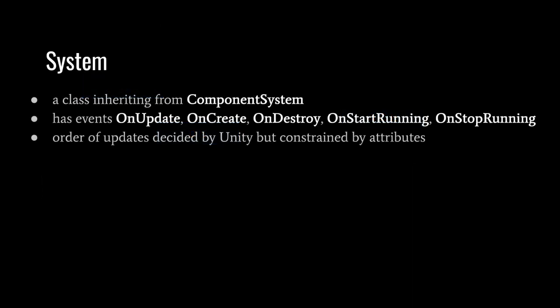A system, concretely, is a class inheriting from ComponentSystem. Like a MonoBehaviour, systems have event methods called in the game loop — OnUpdate, for example, is called once per frame. Unlike MonoBehaviours, we don't attach systems to any game objects. We can group systems and use attributes to determine their order of updates, but where unspecified, the order of updates is left up to Unity.